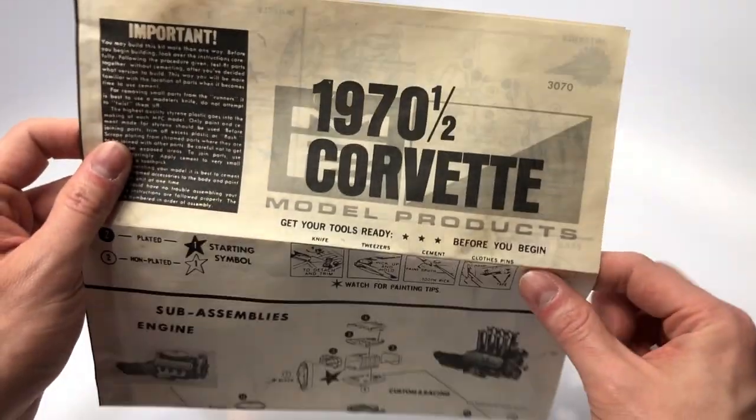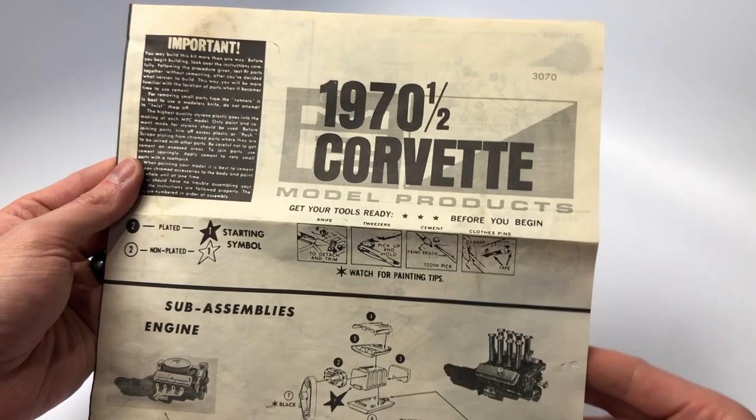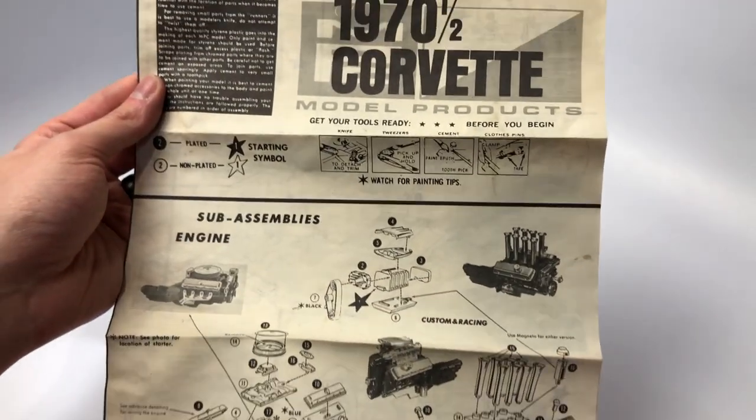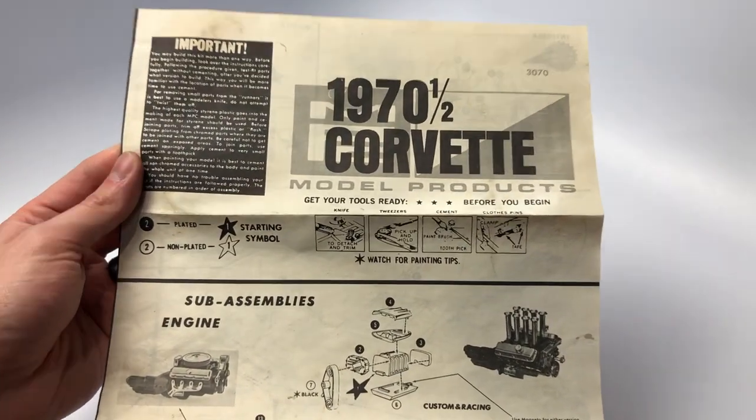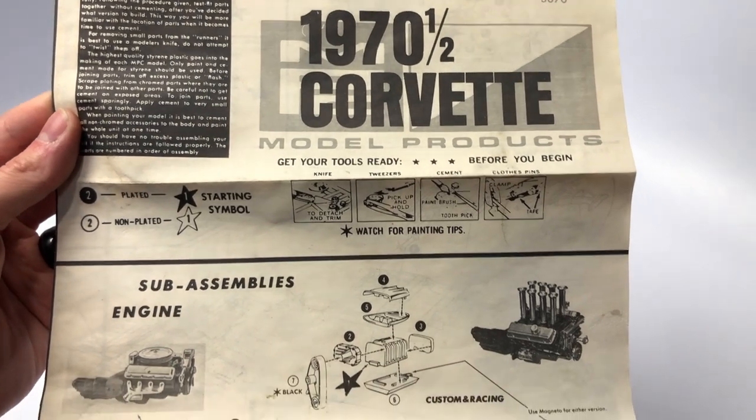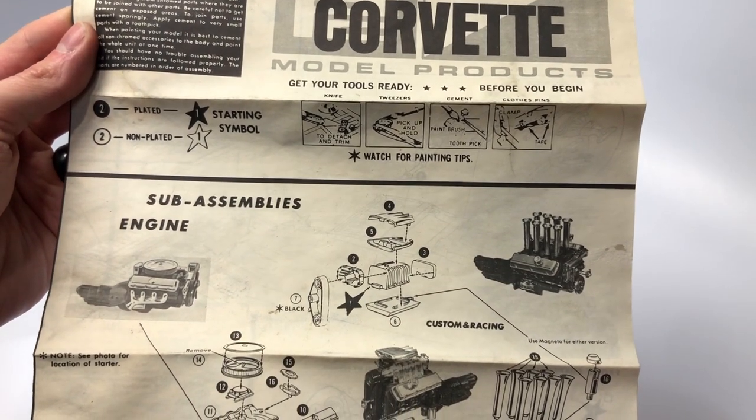Let's start our deep dive with the instruction manual. On the front page of the instruction manual we start with the engine sub-assemblies. You have the option to build this kit with an air cleaner or velocity stacks.